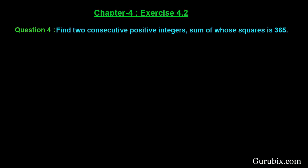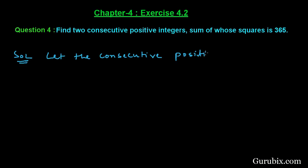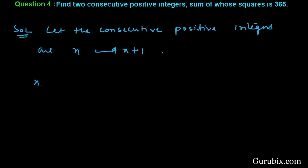Welcome friends. Let us solve question number 4 of exercise 4.2 of chapter 4. The question says: find two consecutive positive integers, sum of whose squares is 365. This is a very easy question. Let us solve it. Let the two consecutive positive integers be x and x plus 1.